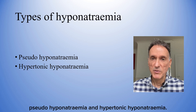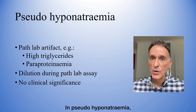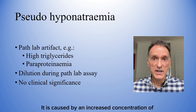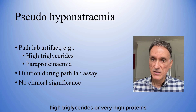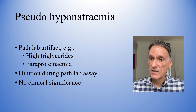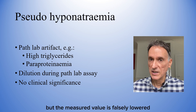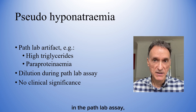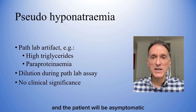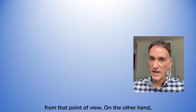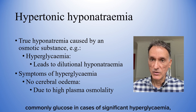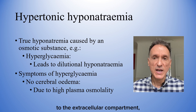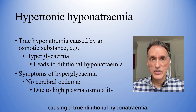We should also describe two other concepts: pseudohyponatremia and hypertonic hyponatremia. In pseudohyponatremia, we are talking about a path lab artifact. It is caused by an increased concentration of non-aqueous components in plasma, such as high triglycerides or very high proteins, like in paraproteinaemia. The sodium concentration is normal, but the measured value is falsely low due to the dilution effect in the path lab assay, so it has no clinical significance and the patient will be asymptomatic. In hypertonic hyponatremia, there is true hyponatremia caused by an osmotic substance — commonly glucose in cases of significant hyperglycaemia — which draws water from the intracellular to the extracellular compartment, causing a true dilutional hyponatremia.